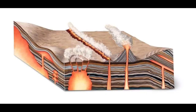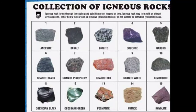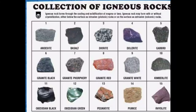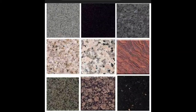The best examples for igneous rocks are granite, basalt, pumice, and obsidian. Granite is an example of an intrusive rock, especially when the magma cools down slowly. All of us know that granite is found in different colours and is used as a building material.